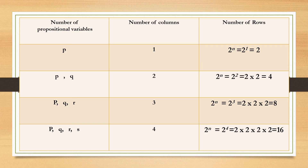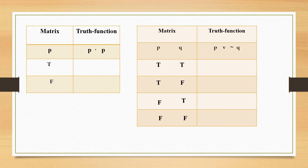This is the way we get the number of rows and columns in the matrix of a truth table. In the truth function, we write the given expression — for example, if P dot P is given, you write P dot P; if P horseshoe curl Q is given, you write P horseshoe curl Q.